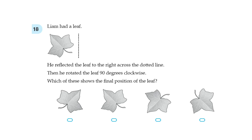This is question 18. Liam had a leaf. So it's shown right there. He reflected the leaf to the right across the dotted line. Then he rotated the leaf 90 degrees clockwise. Which of these shows the final position of the leaf?